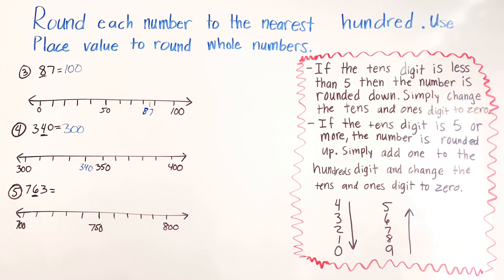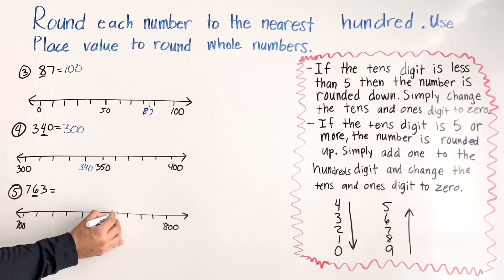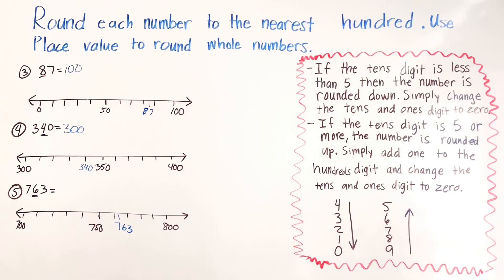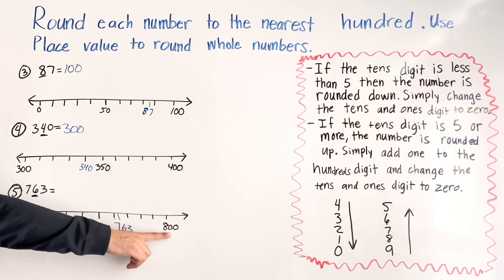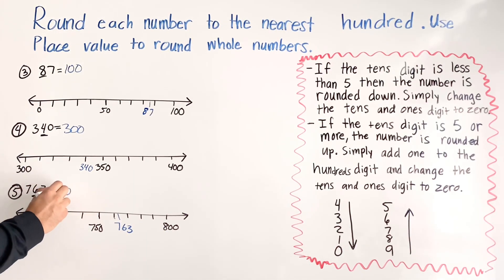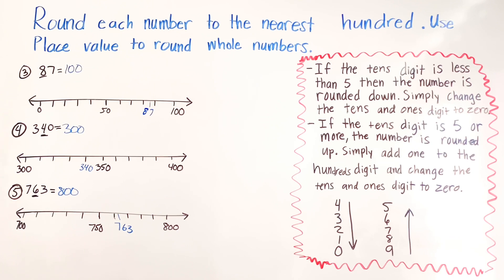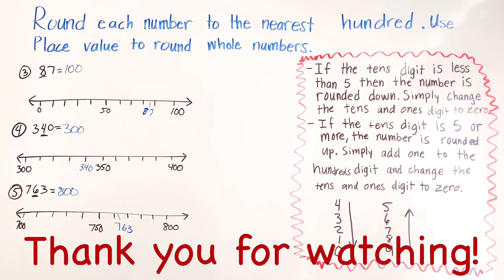For number six we have 763. On the number line: 750, 760 — so 763 is around here. We look at the tens digit, which is six — the arrow shows six means rounding up. So it's not going to be 700, it's going to be 800. You can also see on the number line that 763 is closer to 800 than 700. If you know any friends that need help with this, don't forget to share the video with them.